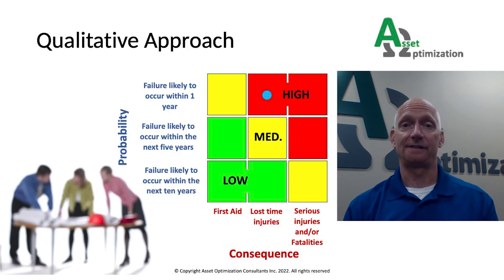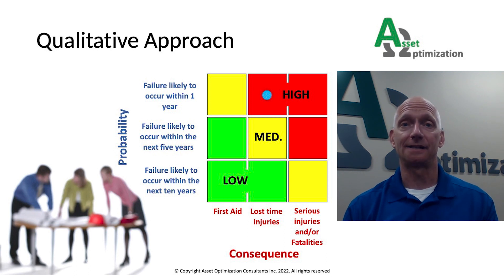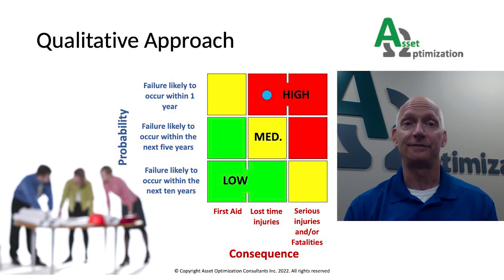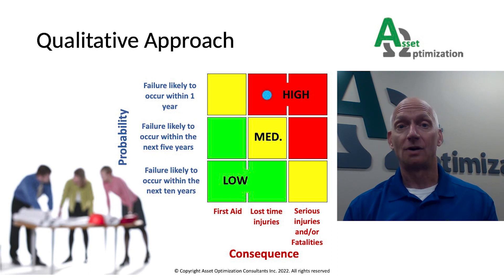A qualitative risk analysis uses subject matter experts and experience to assign broad categorizations of probability and consequence of failure. The probability and consequence values are typically determined in collaborative meetings with personnel knowledgeable about the equipment's design, processes, maintenance and repair history, and operating history. This risk matrix illustrates an example of broad categories that could be used to define probability of failure and consequence of failure with minimal quantitative data to classify risks as low, medium, or high.